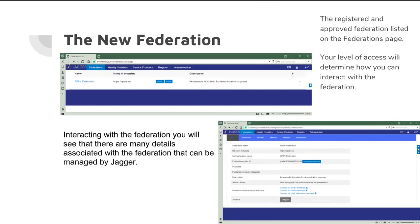Once registered, your new federation will be listed under the federations tab. The level of access you have will determine what parts of the federation you can see. For an admin they can see everything. There are different levels of access — from guests who can't see much, to members who can read information about the various entities in the federation but can't manage or change stuff, and another level allowing people to maintain and change information.